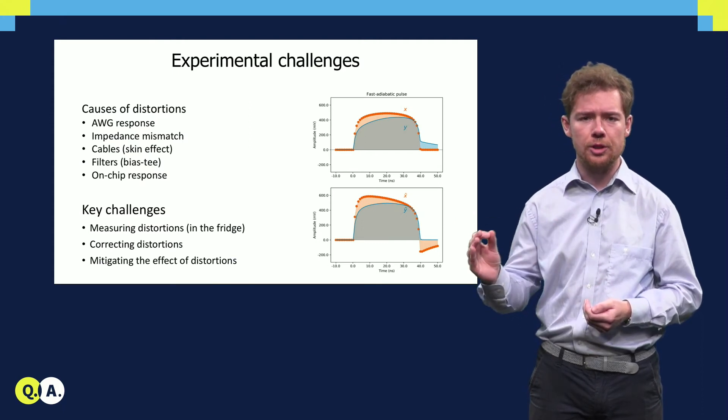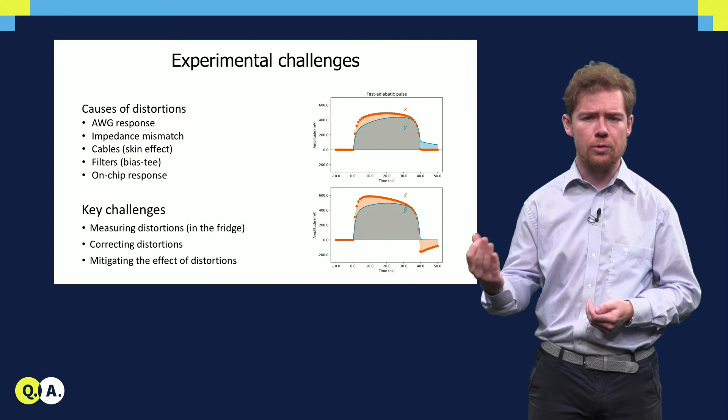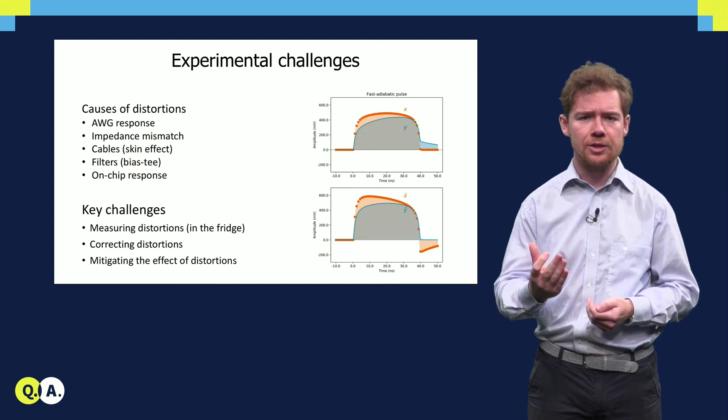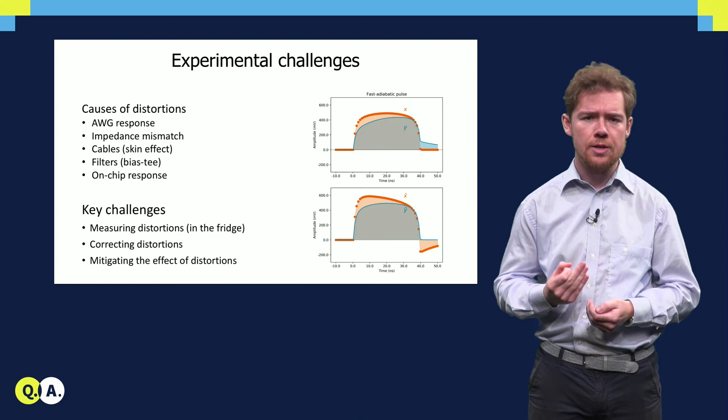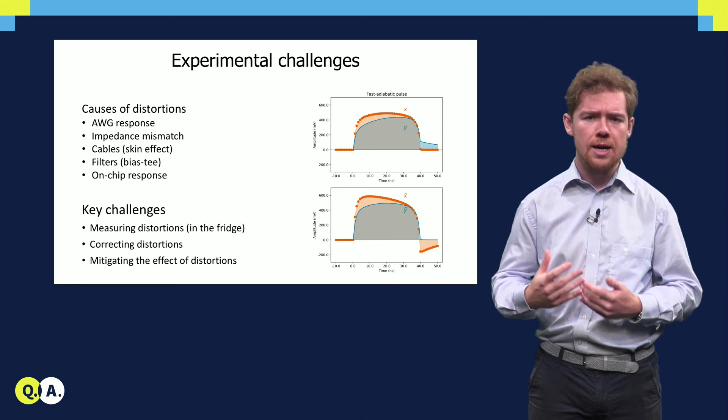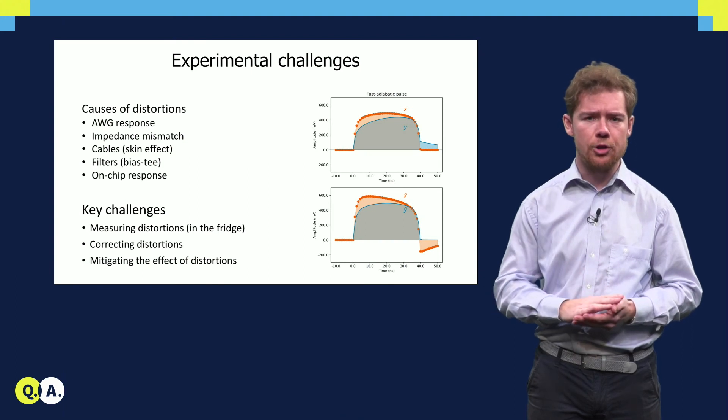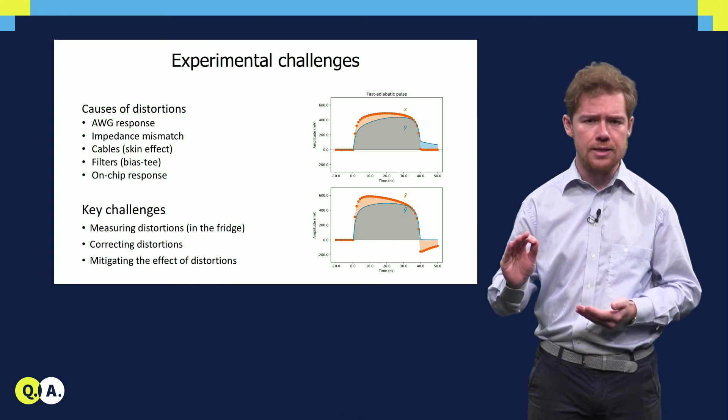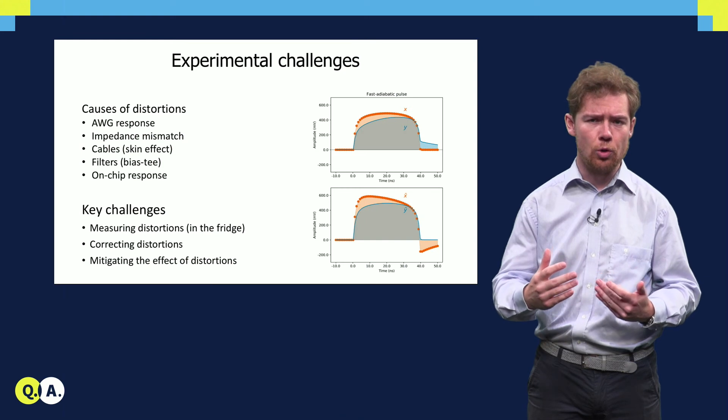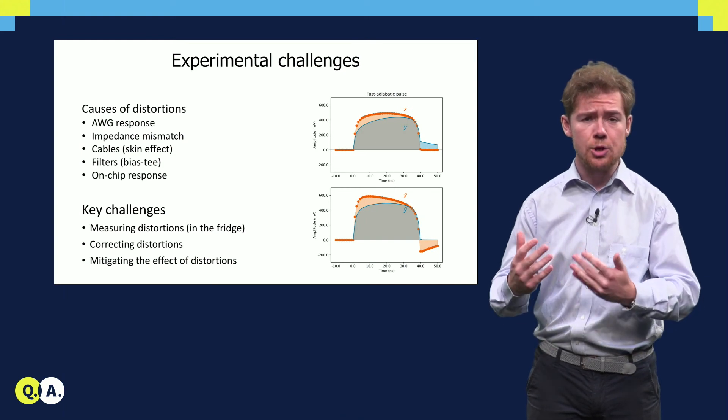The key challenge in flux pulsing-based CZ gates is to correct for these distortions. This requires characterizing the distortions that the qubit experiences when cooled down, and correcting these with sufficiently high precision. At the same time, efforts are underway to become more resilient against these effects, both by exploring new pulse-shaping techniques and through innovations in the hardware.